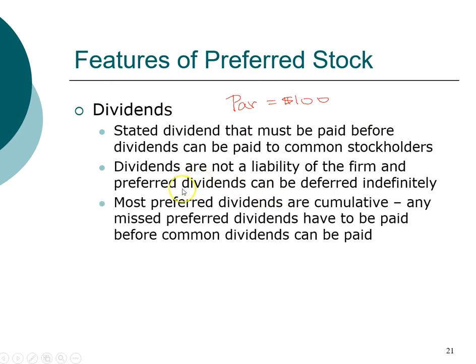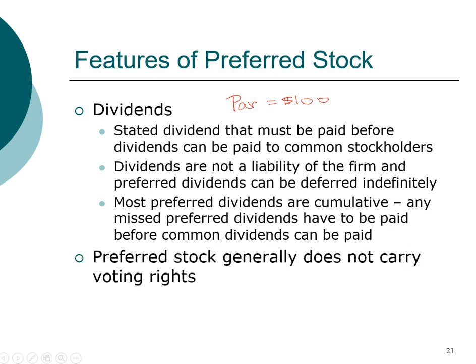Even though dividends are not a liability, preferred stock is often cumulative, meaning that if a company misses a preferred dividend payment, they must make up all back dividends before any common stock dividends can be paid. Another important characteristic of preferred stock is that it typically does not carry voting rights. An exception is that if dividends are not paid for a certain number of years, preferred stockholders may gain the right to vote — a clause included to protect preferred stockholders.